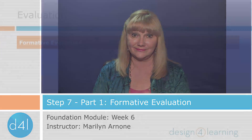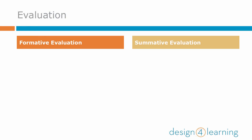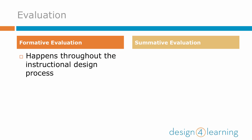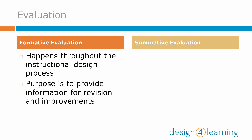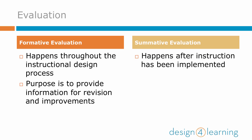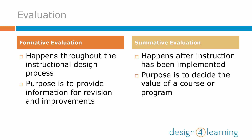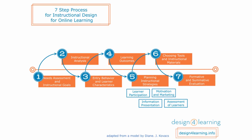Let's start with definitions. Let's define the two parts of the evaluation process: formative evaluation and summative evaluation. In a nutshell, formative evaluation happens during the design and development process with the purpose of informing decision-making regarding revisions and improvements to instruction. Summative evaluation happens after instruction has been implemented with the purpose of determining the worth or value of a course or program.